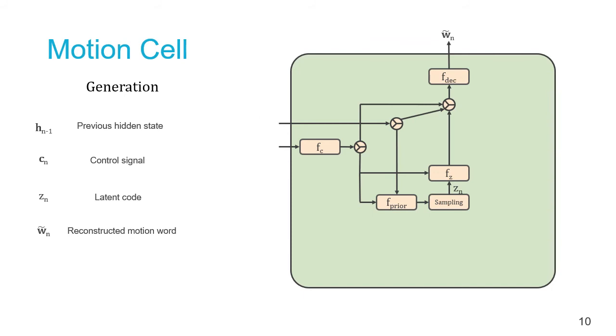We again sample a latent code from the prior distribution, which is then given to the decoder to reconstruct the word by using the concatenation of the latent code, previous hidden state, and control signals. The generated word is also passed back into the network.